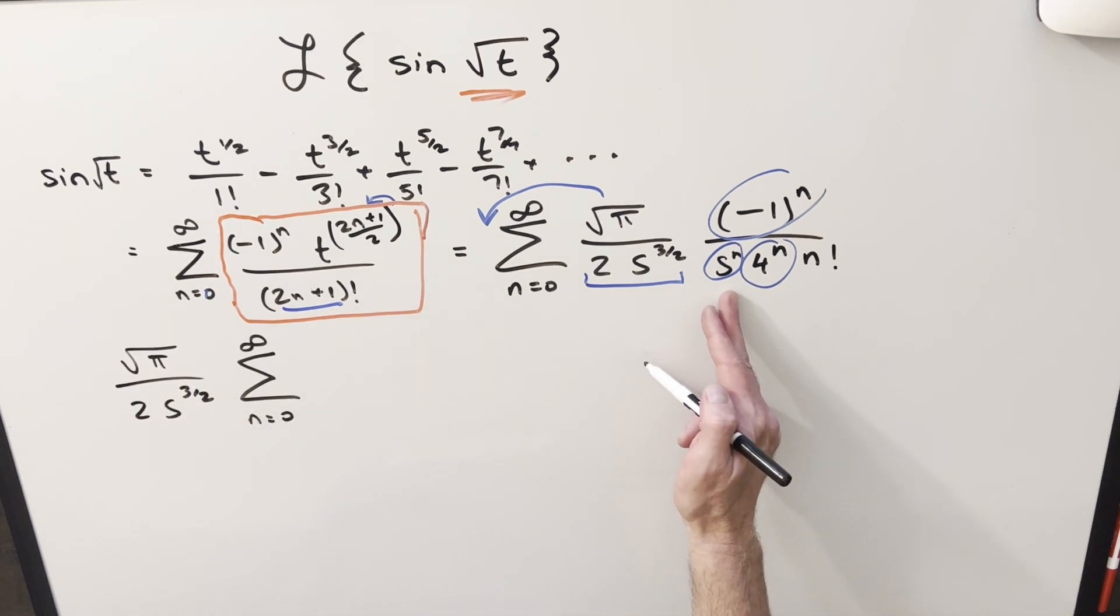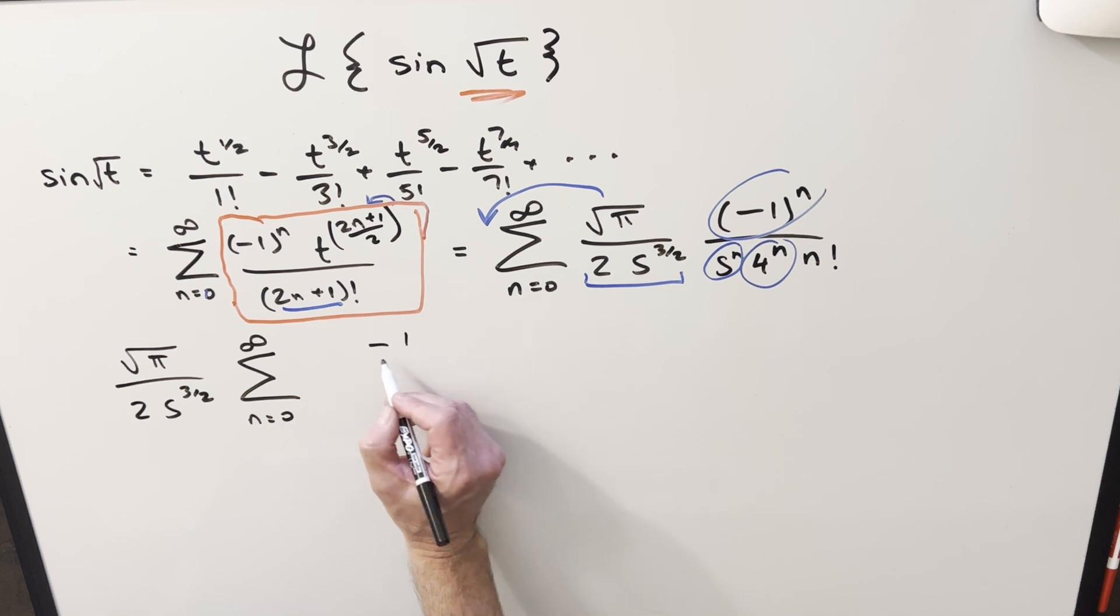So let's rewrite it and bring the constant stuff out front. And then combining everything with the same exponent into one term, what's going to happen is I can write this as minus one over 4s, just changing the order there, and have this all to one exponent n. And all this stuff is just going to be over n factorial.